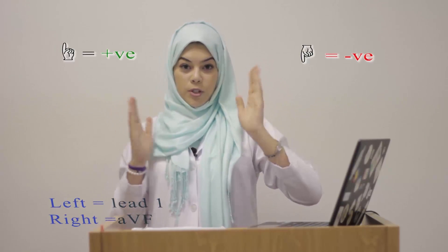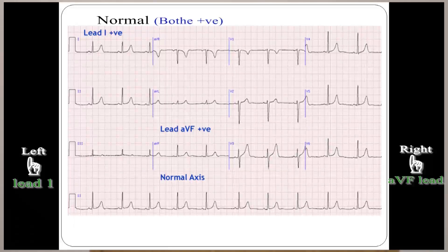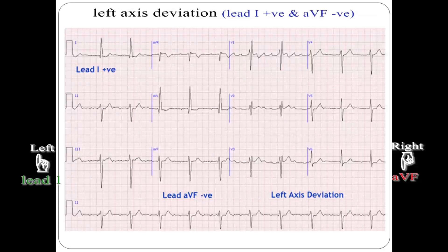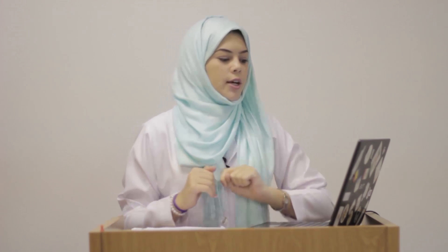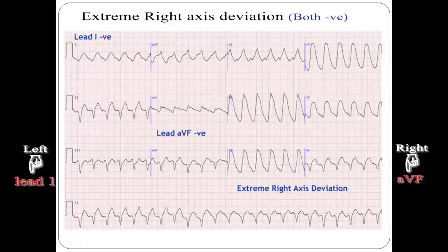Moving on to the axis — we'll pretend my left hand is lead 1 and lead AVF is my right hand. If it's facing upwards it's positive, and facing downwards it's negative. If it's normal, you've got two positives, both facing upwards. For left axial deviation, lead 1 is positive and AVF is negative. For right axial deviation, lead 1 is negative and AVF is positive. If they're both negative, then you've got extreme right axis deviation, or it's undetermined.